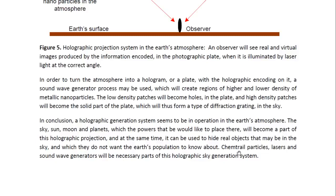In conclusion, a holographic generation system seems to be in operation in the Earth's atmosphere. The sky, sun, moon and planets which the powers that be would like to place there will become a part of this holographic projection.